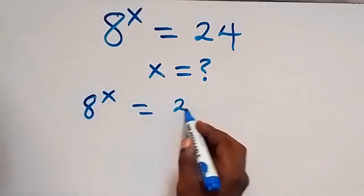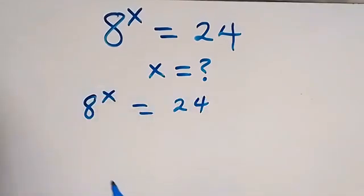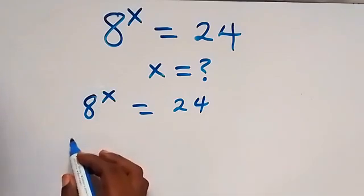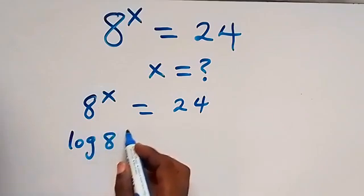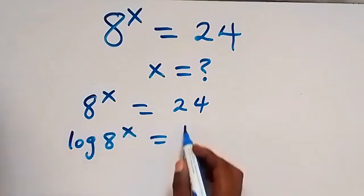Given 8 raised to power x equals 24, let's take the log on both sides. Then we have log 8 to the power of x equals log 24.